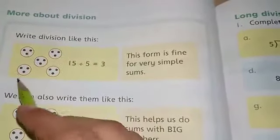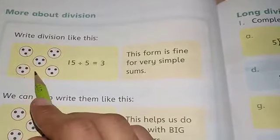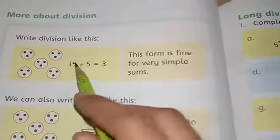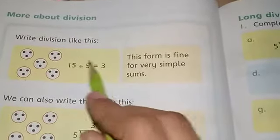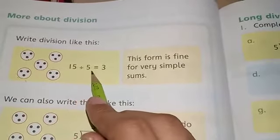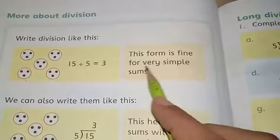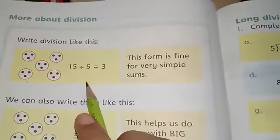Now, three dots in each multiplied together—five threes are fifteen. Fifteen divided by five is equal to three. This form is fine for very simple sums.